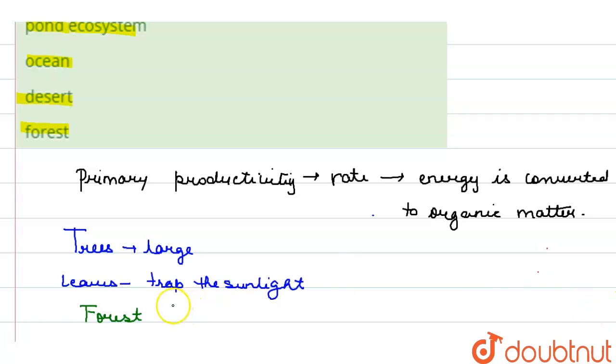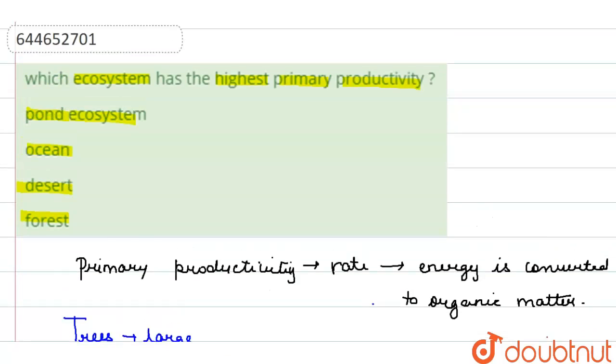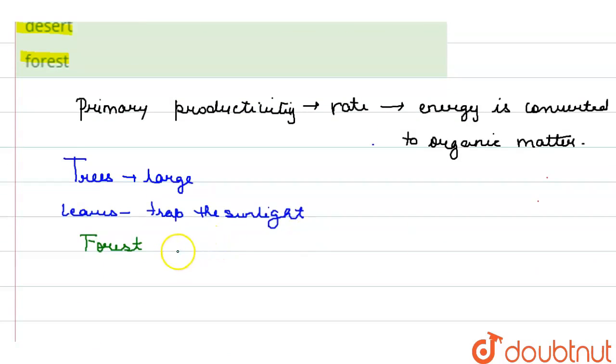primary productivity. So from the options we can see that the ecosystem or forest ecosystem has the highest primary